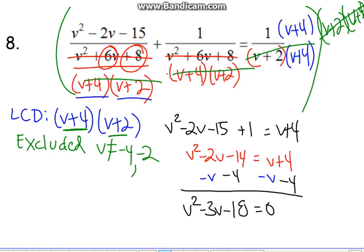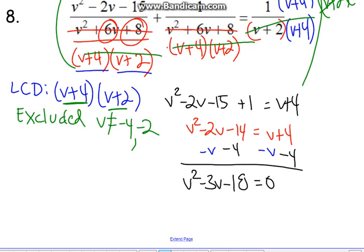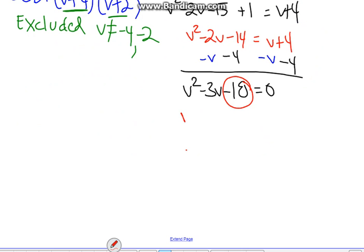This is exactly what I want because now it's another quadratic that we can try and factor. Think about two numbers that are going to multiply together to give me negative 18. If you guessed negative 6 and positive 3, that was the right one because negative 6 plus 3 gives me the negative 3v that we're looking for.